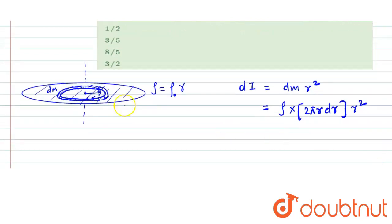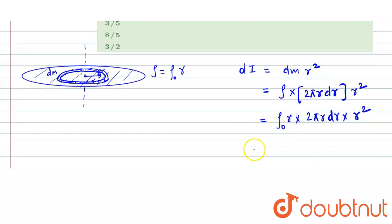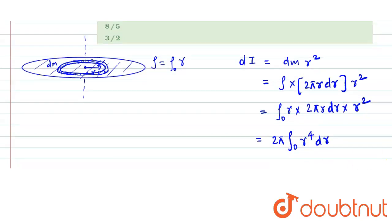Now what is rho? Rho is not constant. Rho is varying as rho naught r. So at a distance r we can put the value of rho as rho naught into r. So this becomes, constants are 2 pi rho naught, and r into r, r to the power 4 into dr. This is what the moment of inertia is.